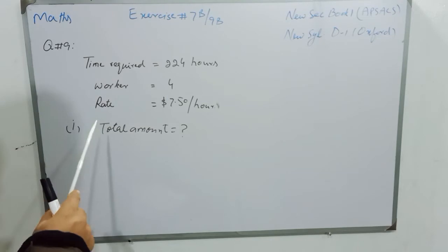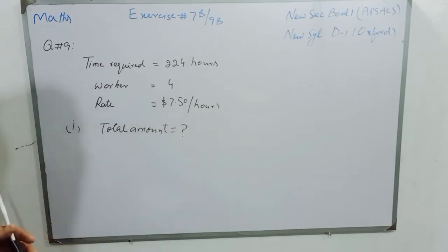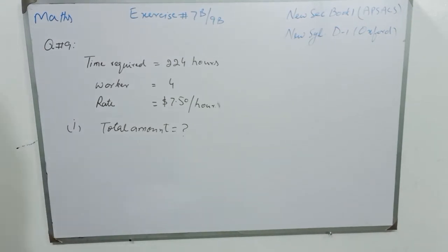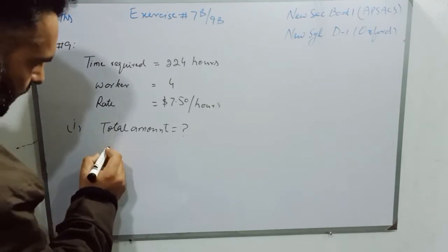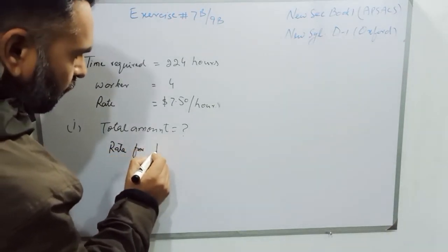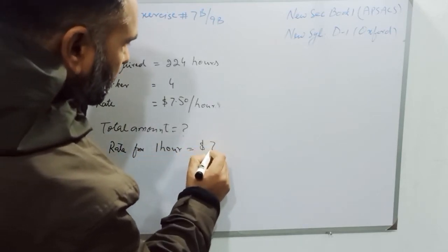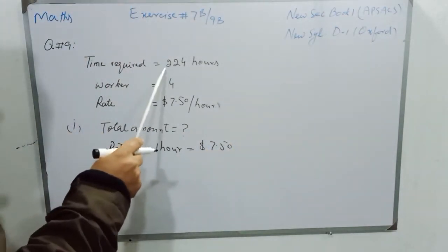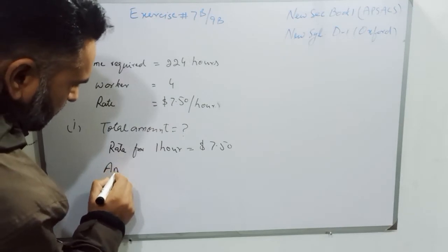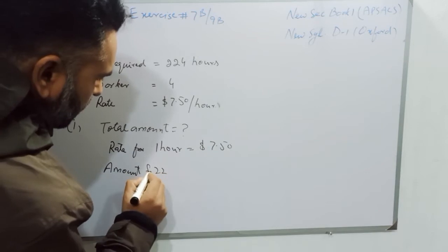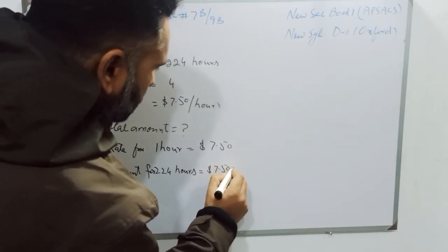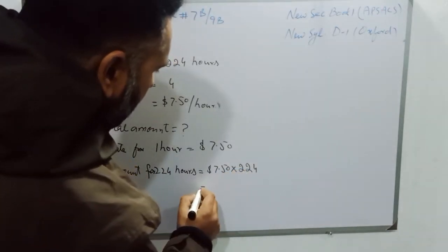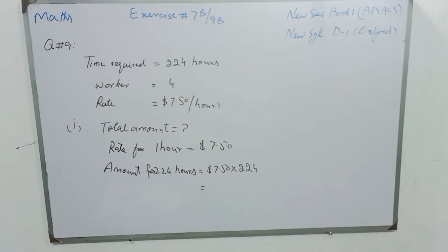So students, keep in mind that the rate is $7.50 per hour. We will find the total amount for the project at normal rate. Rate for 1 hour is equal to $7.50, and we have to find the total amount for 224 hours. Amount for 224 hours will be $7.50 multiplied by 224, and the answer will be $1,680.